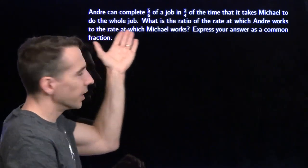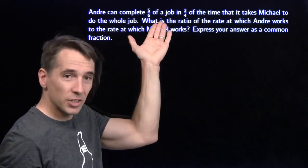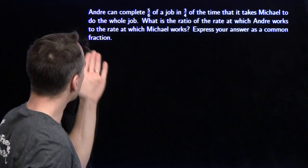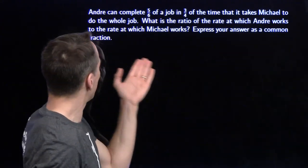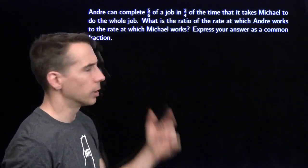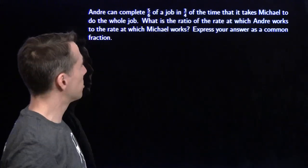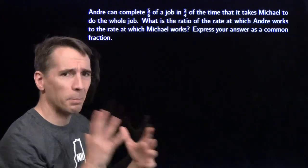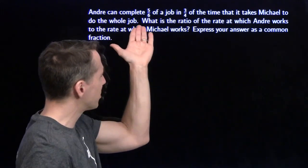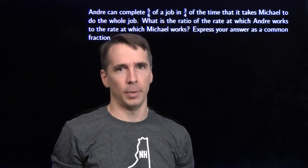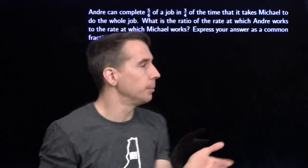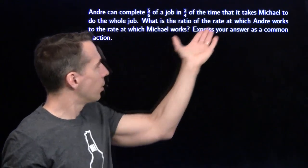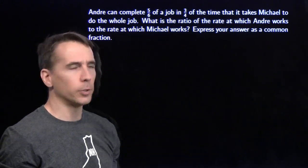We got Andre. He can complete 5 sixths of a job in 3 quarters of the time that it takes Michael to do the whole job. What's the ratio of the rate at which Andre works to the rate at which Michael works? This is confusing. We need to compare apples to apples here. We've got 5 sixths of a job in 3 quarters of the time. I want to compare the amount of work he can do in the same amount of time.